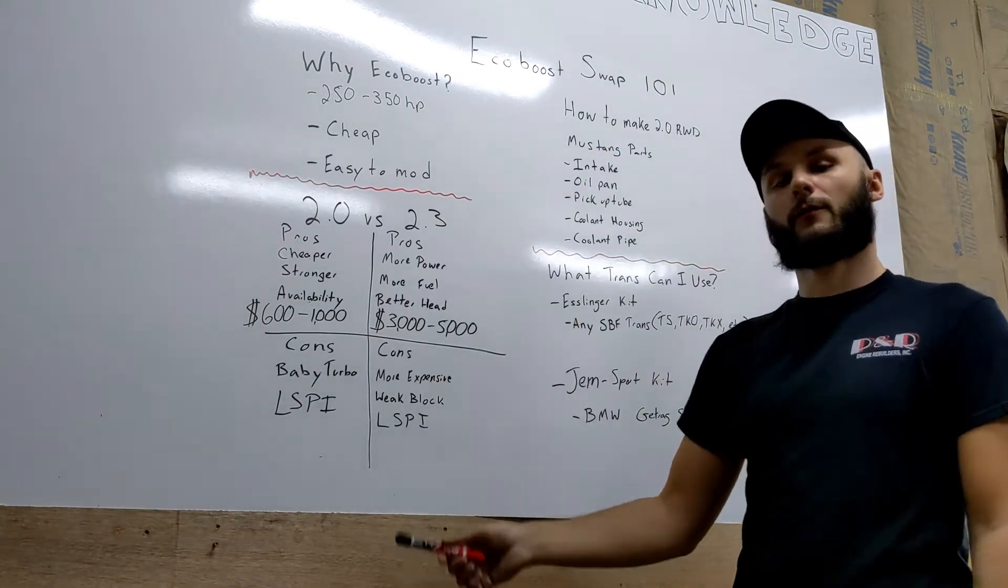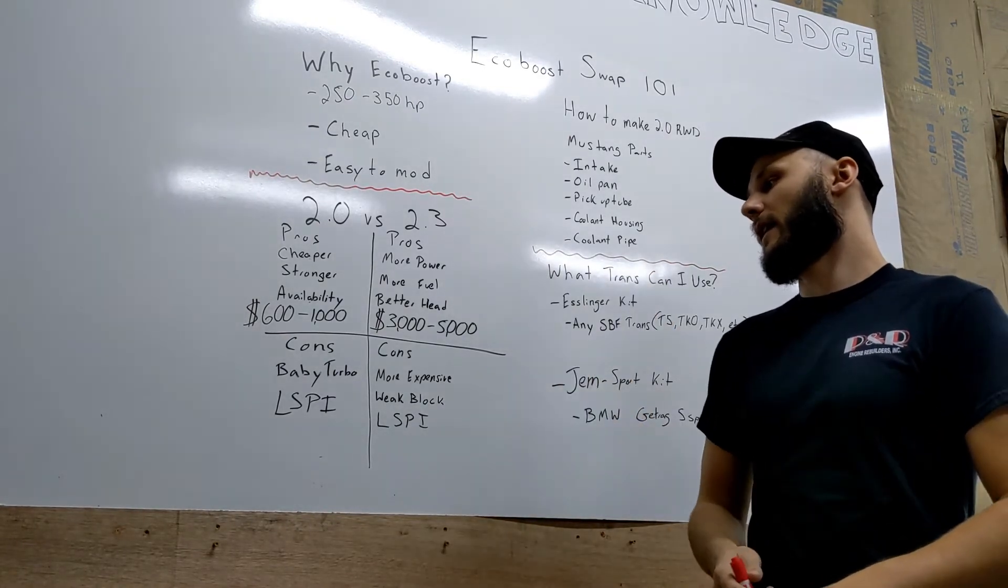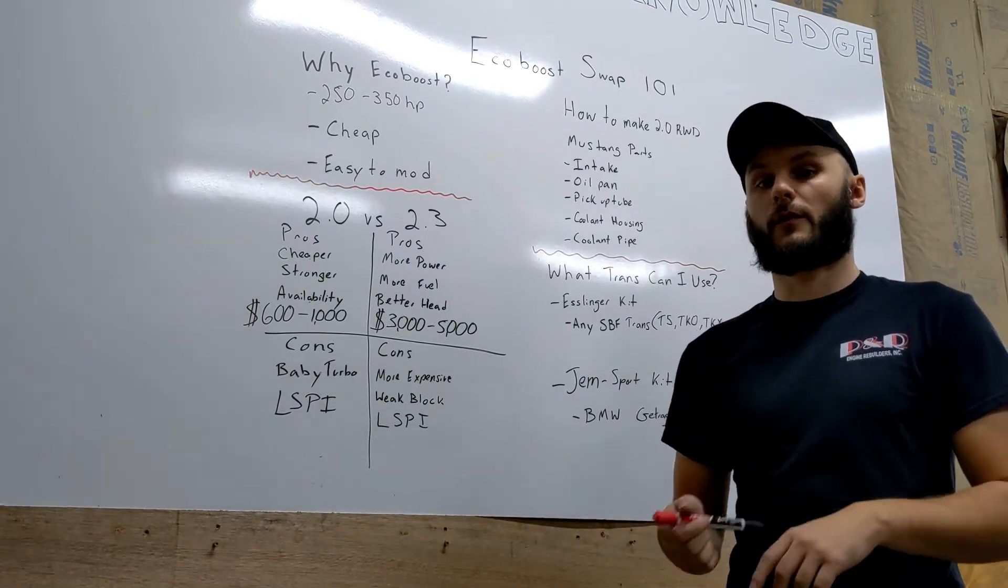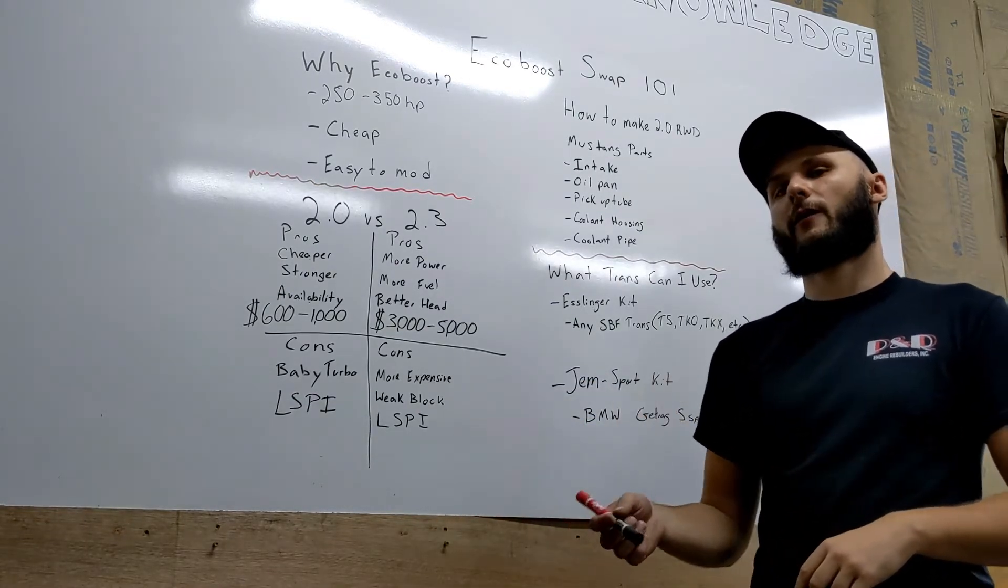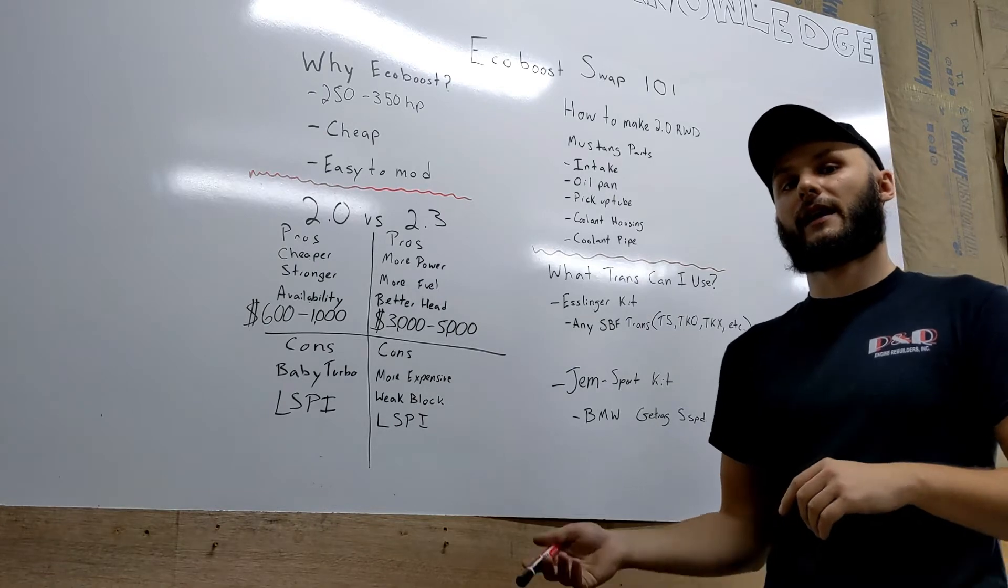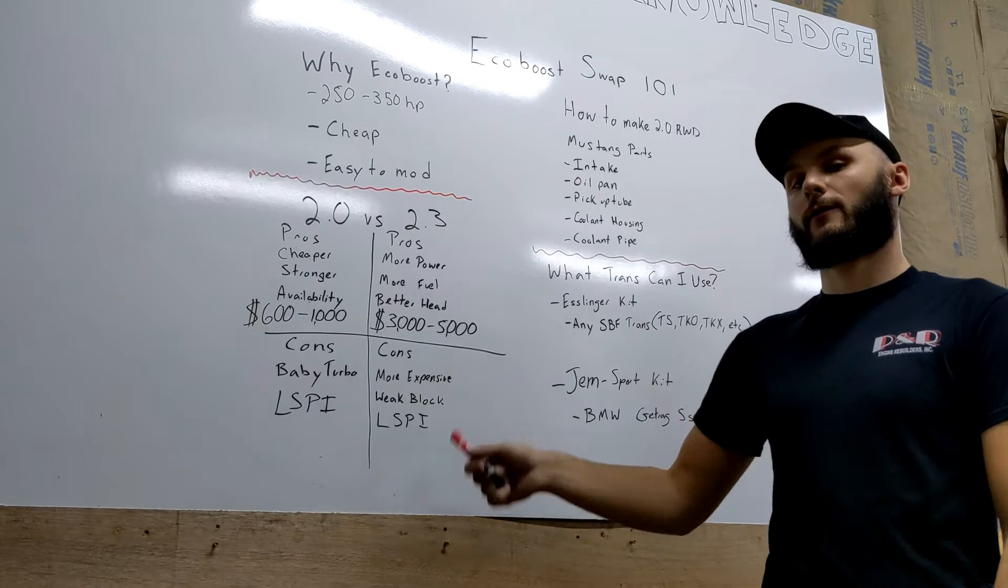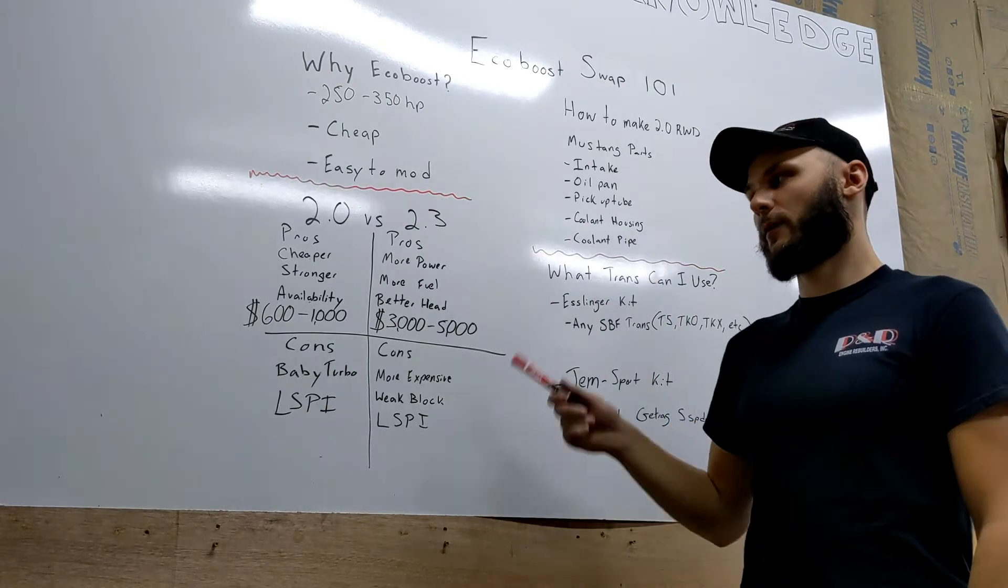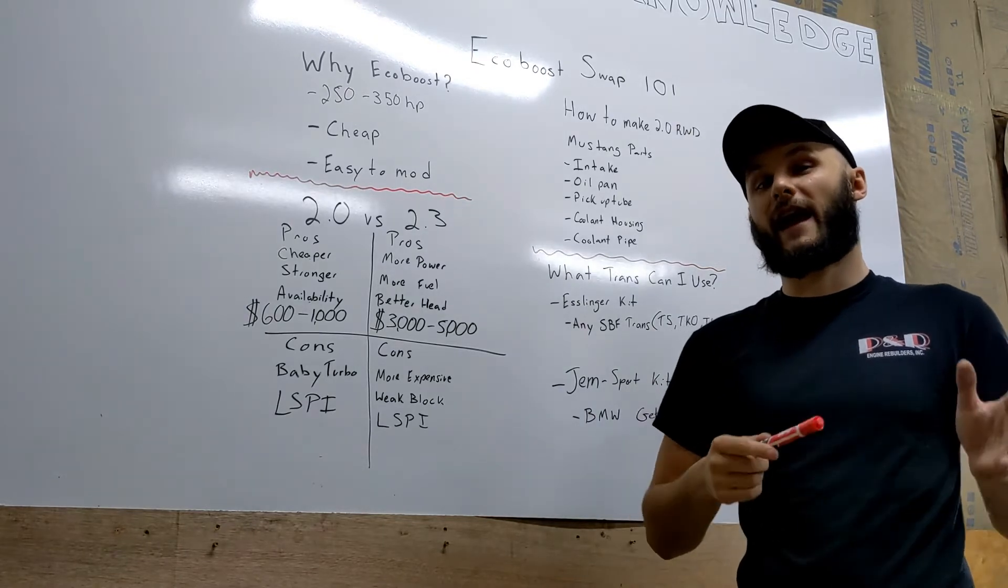Cons for the 2.3: they're more expensive, we talked about that, and they have a weaker block with being open deck. Both of them suffer from LSPI, which is common with a lot of direct injection turbocharged engines. LSPI is low-speed pre-ignition. This happens when you're making a whole bunch of power down low, you know, 2000-3000 RPM. You can start getting into some knocking and that causes piston damage, rod damage. That's how a lot of these engines crack ring lands. This is only really an issue with the stock turbo. If you go with a larger turbo, it doesn't make as much power in that low range, so you don't really have that issue. Just don't lug the engines and you'll be fine.